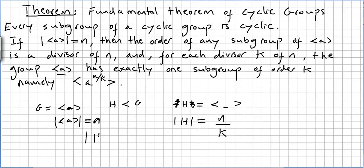So there will be H₁ of order K, a subgroup of this group, and H₁ will be generated by A to the power of N divided by K.